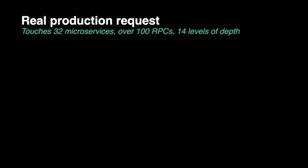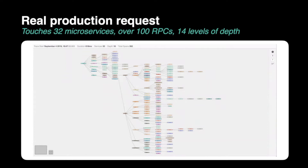Modern architectures are really deep systems, and deep systems present unique challenges in terms of observability. If we look at this picture — just a screenshot of the microservices layout at Uber a few years ago — imagine a request coming from a mobile application. That request might go through a large number of services, all participating together in servicing one single request. This is an actual representation of a real production request from Uber. It might be an application start, and we can see there are over 100 remote procedure calls within that execution, 14 levels of depth.